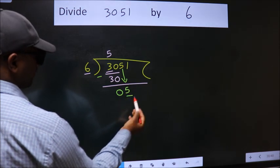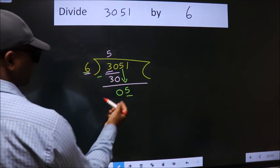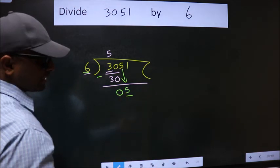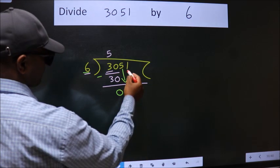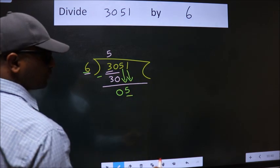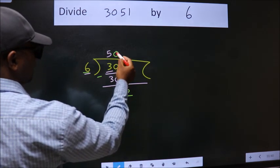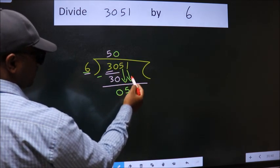Here we have 5, here 6. 5 is smaller than 6, so we should bring down the second number. And the rule to bring down the second number is put 0 here. Then only we can bring down this number.